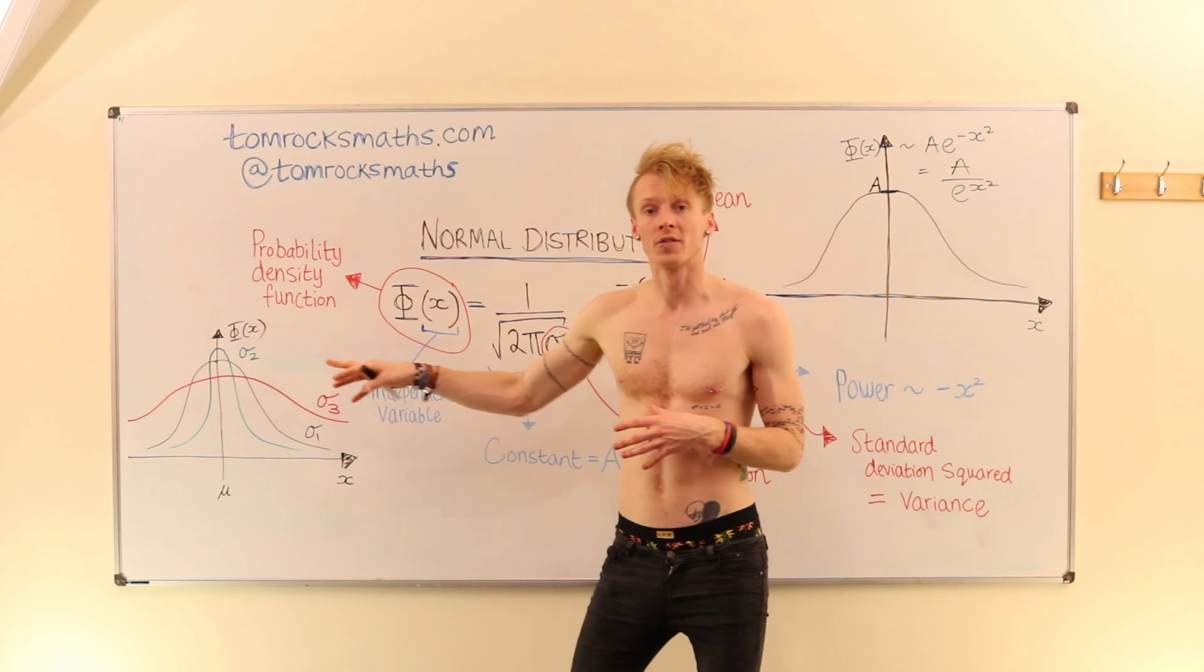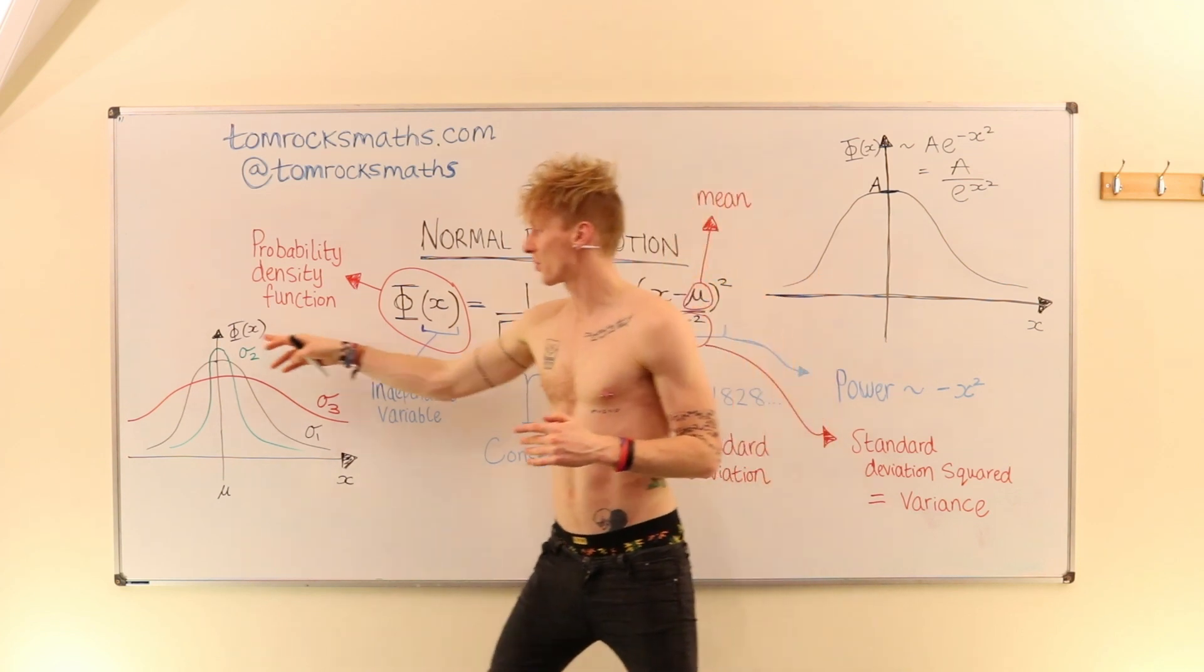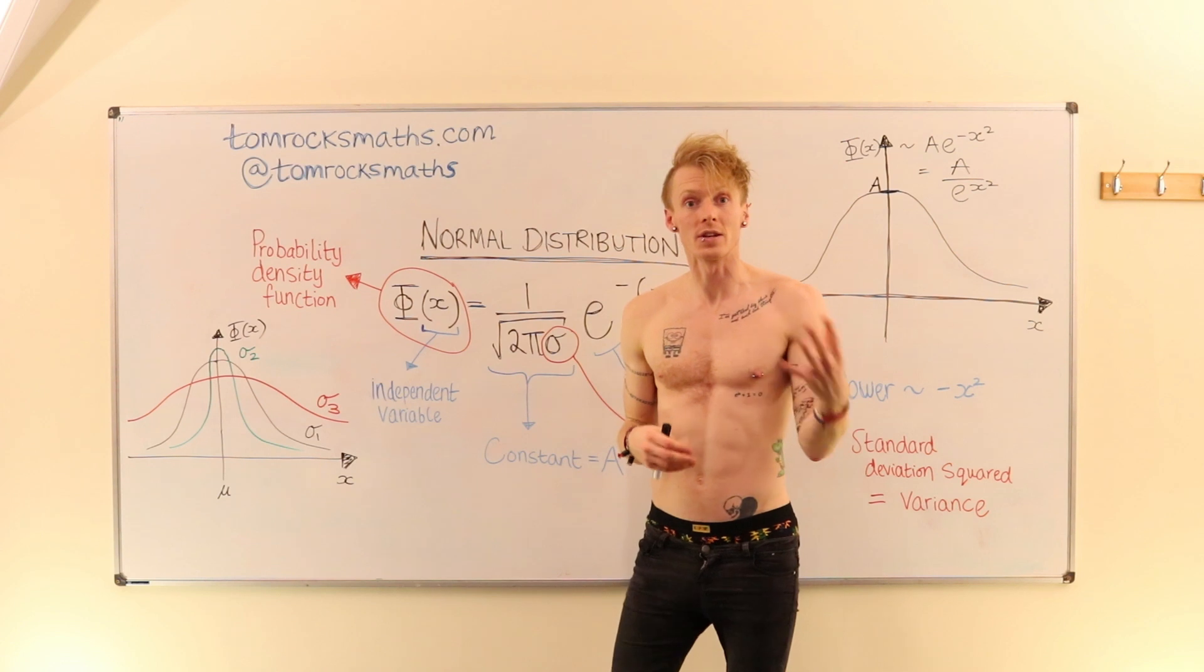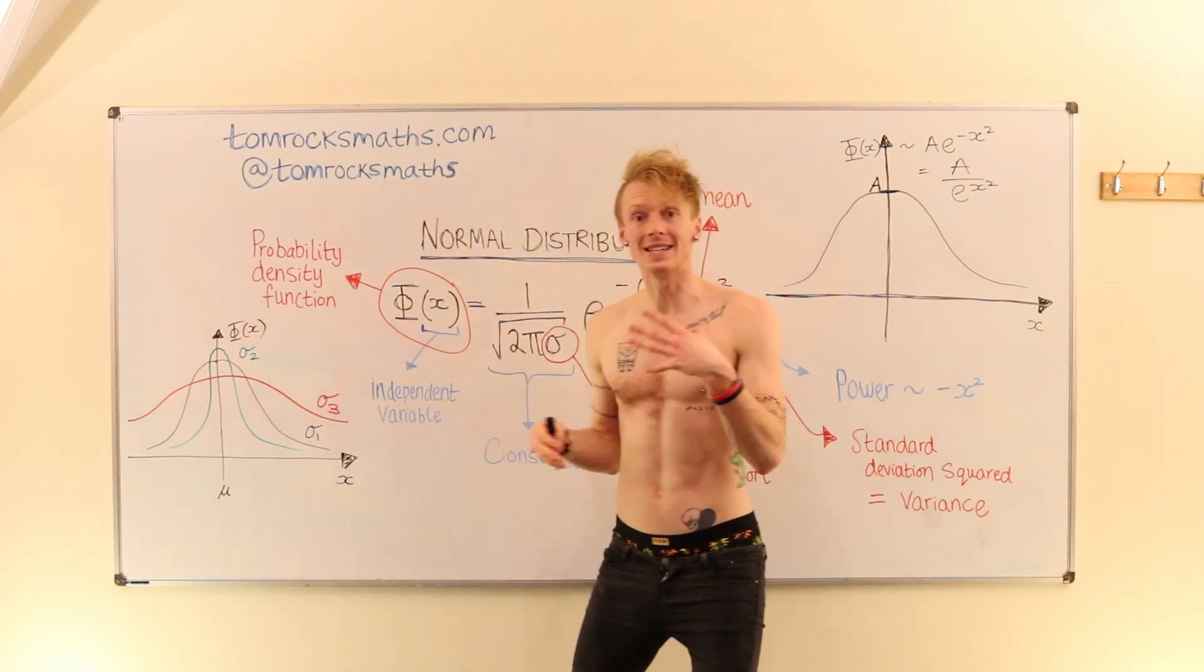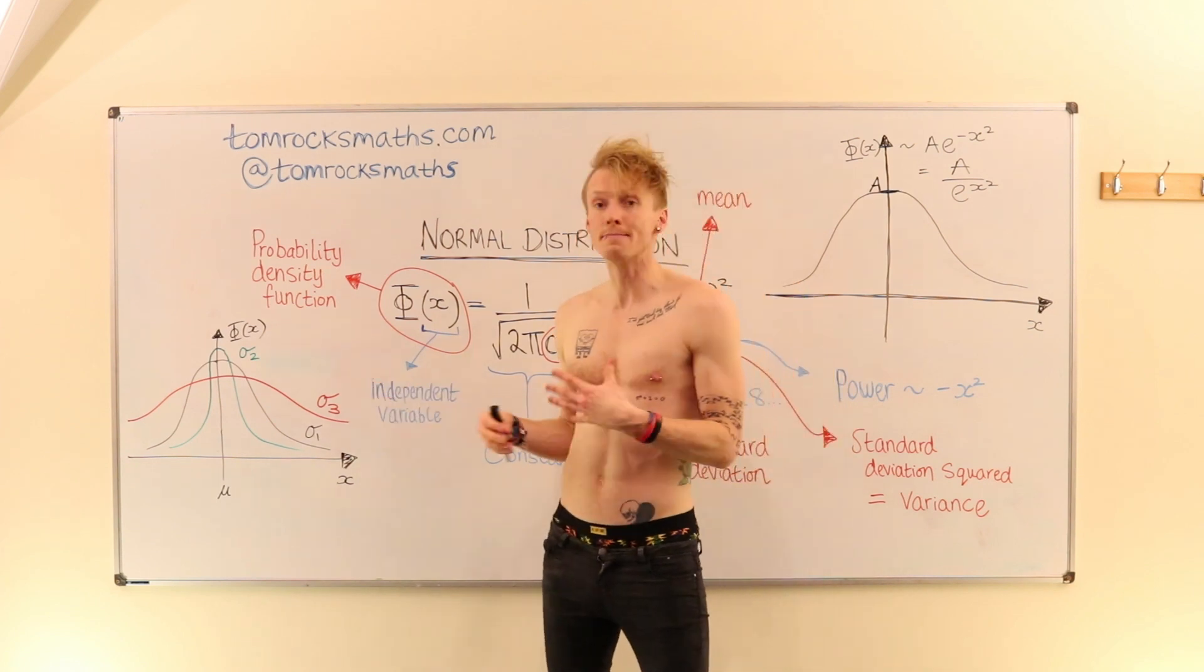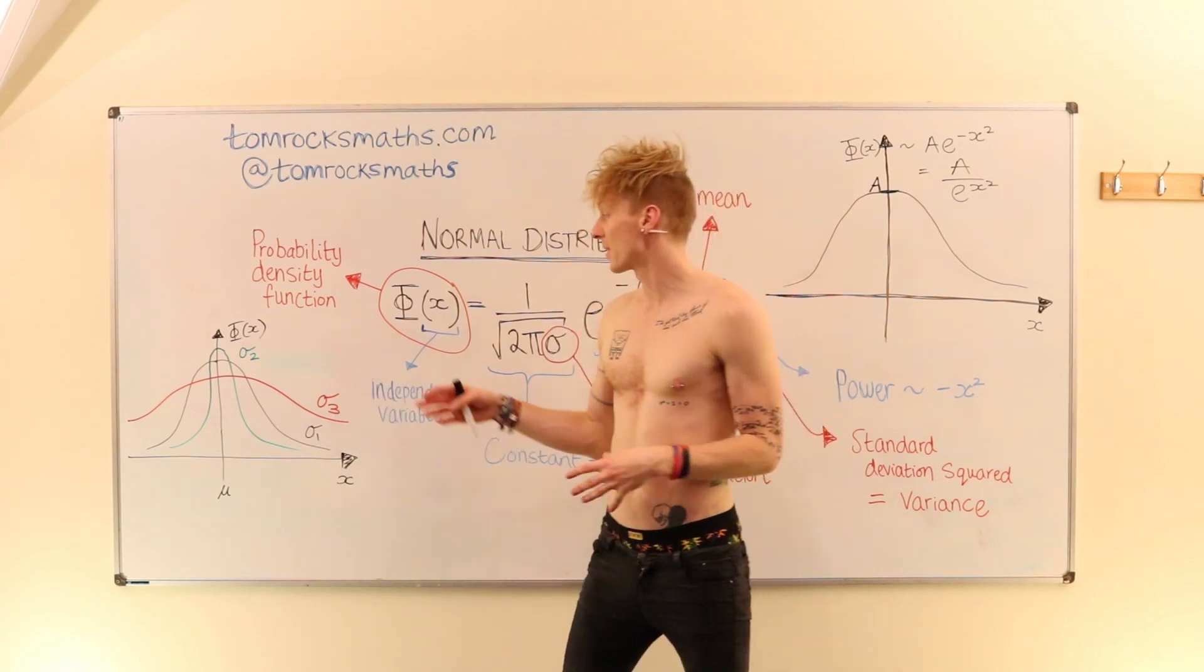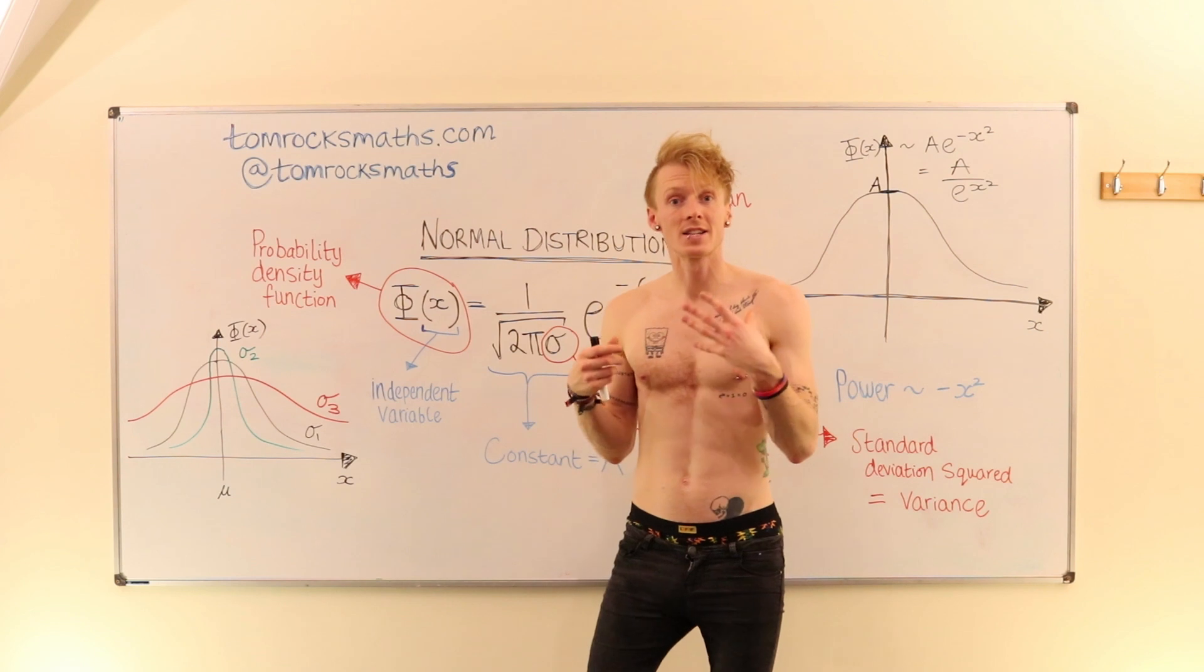you very quickly decrease as you move away from the mean value in your data. Whereas for the red curve, you only see a slight decrease. So the red curve has a much larger spread, and the green curve has a much smaller spread.